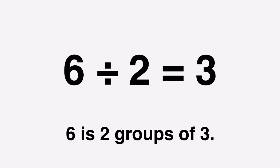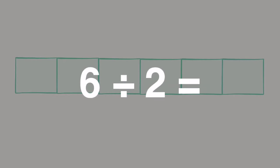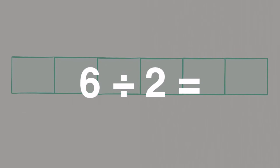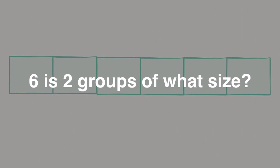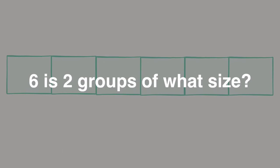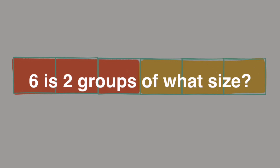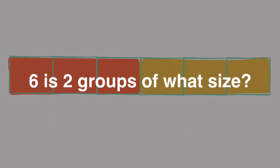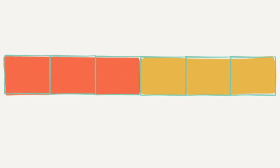That may not sound very different, but let's look at it visually. Here are the 6 we're going to divide by 2, but this time we focus on 6 being 2 groups of what size. We take our 6 and make it into 2 groups. What is the size of those 2 groups? The size is the number of units in each group, which would be 3.